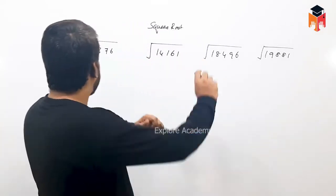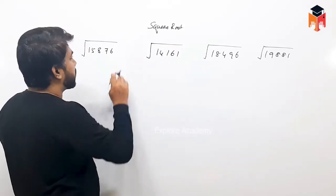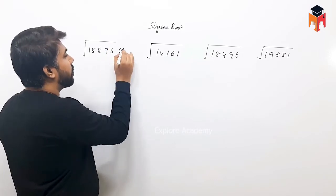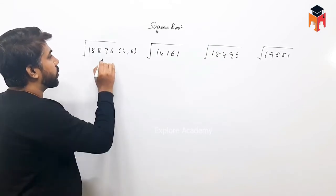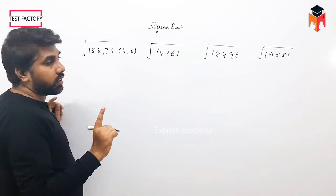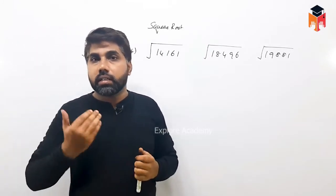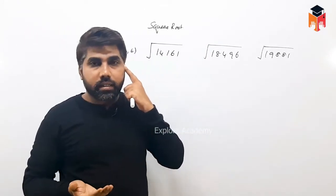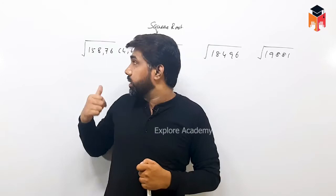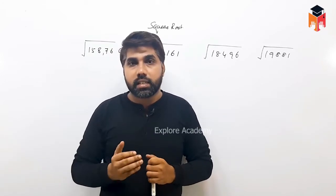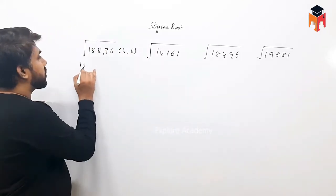The first question: find the square root of 15,876. Step 1: the last digit is 6, so the result's last digit is 4 or 6. In the right side, you use 2 digits. If you choose 2 values, use 158. 10 squared is low, 11 squared is 121, 12 squared is 144, 13 squared is 169. So we use 12 to 13. Step 2 is clear.